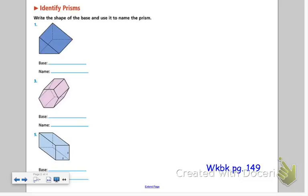Let's take a look at workbook page 149. Here we have a variety of prisms. Take a look at number one.